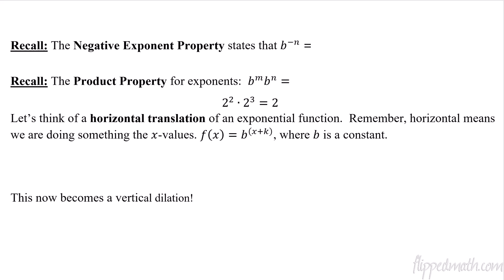To start us off, the first thing is the negative exponent property. That's when you have some base and you're raising it to a negative exponent. What happens? You get the same thing, but it's the reciprocal and the negative disappears. So instead of b raised to the negative n, you get 1 over b raised to the positive n. A pretty simple property, but a very valuable one for things we're going to look at today.